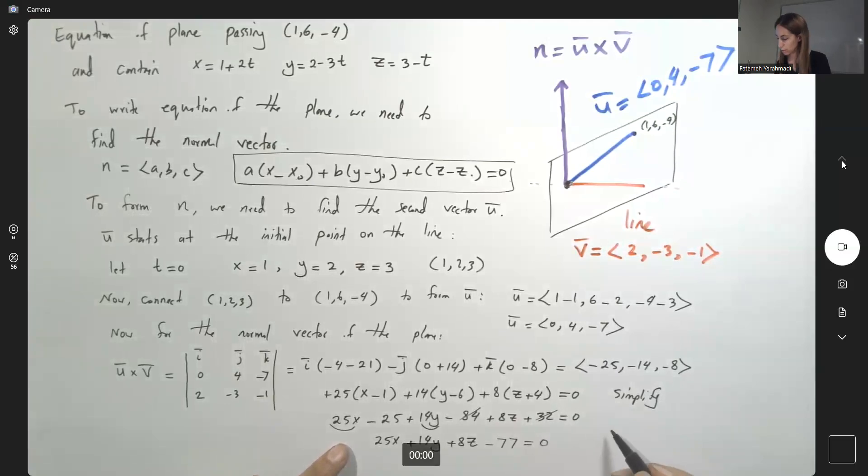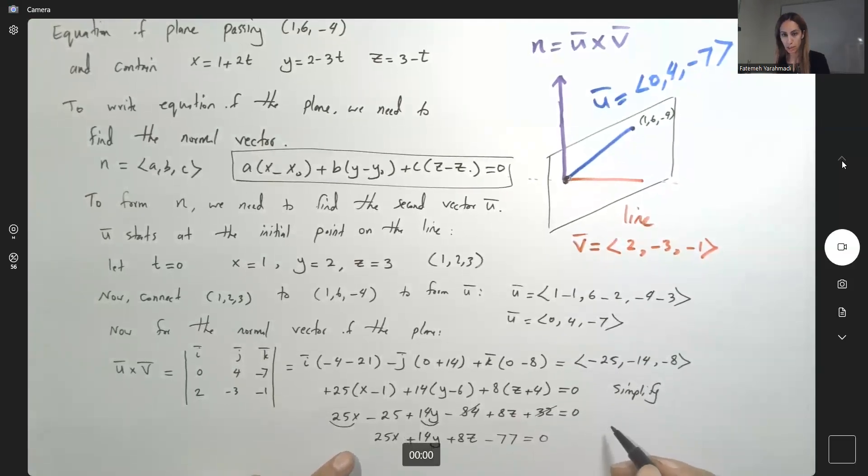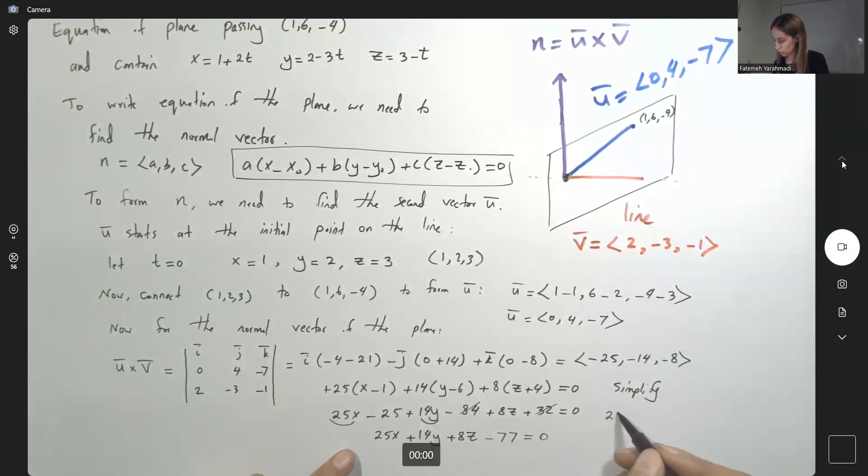Equal to 0, or basically the equation of this plane can be written as 25x plus 14y plus 8z equals 77. This is what we're looking for, and since they don't have any common factor leave it as it is.